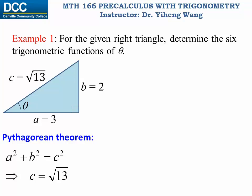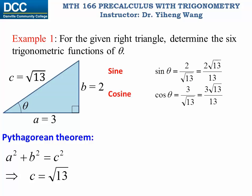Now we're ready to write the six trigonometric functions. Sine theta is defined as the length of the opposite side over the length of the hypotenuse side. Therefore it is two over square root of 13, rearranged to be two times square root of 13 over 13. Cosine theta is the adjacent side over the hypotenuse side, therefore it is three over square root of 13, which equals three times square root of 13 over 13. Tangent theta is the opposite side over the adjacent side, in this case simply two over three.